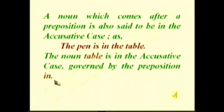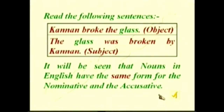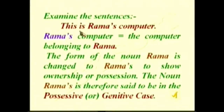Consider: 'Pronoun broke the glass' — here 'the glass' is the object of the sentence. It will be seen that nouns in English have the same form for the nominative and the accusative; there is no change. The nominative generally comes before the verb and the accusative after the verb. That is the main difference between the nominative and accusative case — hence they are distinguished by the order of words.